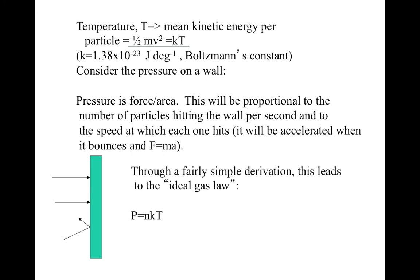So let's consider the pressure on a wall. Pressure is, as I said, force per unit area. This will be proportional to the number of particles hitting the wall per second and to the speed that each one hits. As we remember from Newton's second law, force is equal to mass times acceleration. So if a particle hits the wall and turns around in direction, that's an acceleration. It exerts a force on the wall.